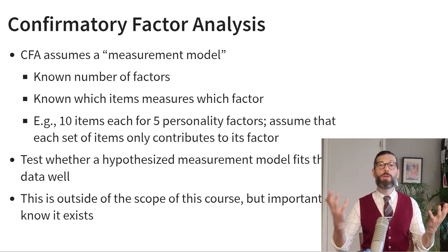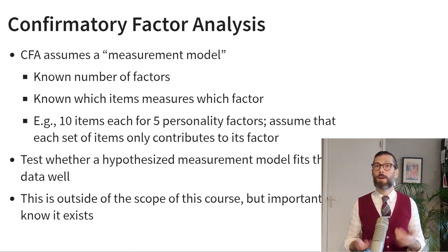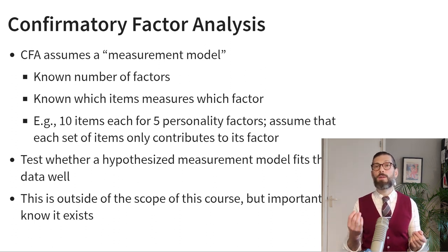For example, in confirmatory factor analysis you can say there must be two latent variables — neuroticism and extraversion — and neuroticism is only allowed to be associated with questions designed to measure neuroticism, and extraversion is only allowed to be associated with questions measuring extraversion. Neuroticism and extraversion are allowed to be associated, but their questions should be distinct. That's a highly specified theoretical model and we use confirmatory factor analysis to test how well our theoretical measurement model fits the observed data. In confirmatory factor analysis we assume we know how many latent variables there are and which items load on which latent variables.